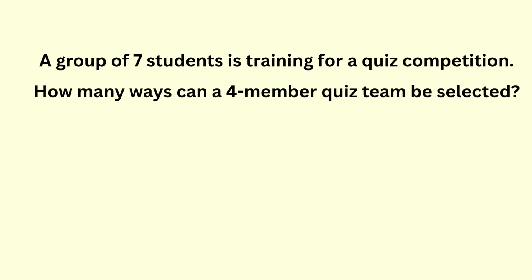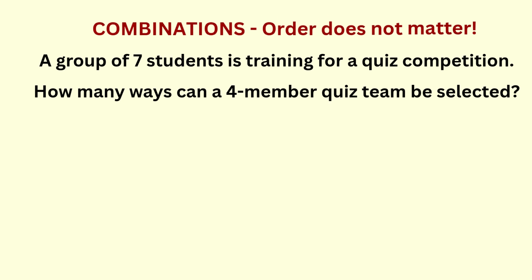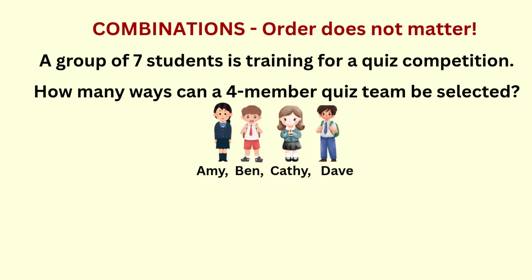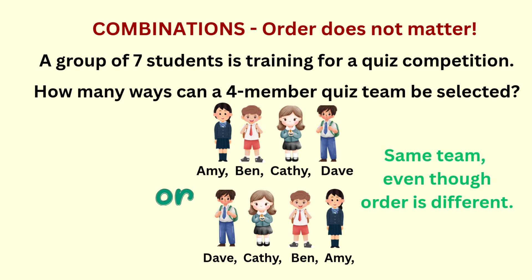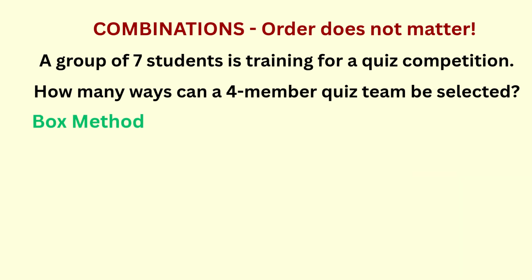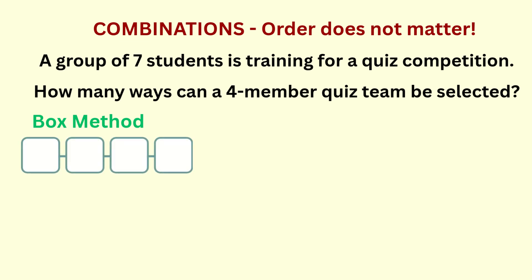Let's look at another problem. Imagine you have a group of 7 students training for a quiz competition and you need to choose 4 — no specific roles, just 4 students to represent the school. This is a combination problem because the order doesn't matter. Whether Amy, Ben, Cathy, and Dave are listed in that order or reversed, it's still the same team. So how do we calculate this? We can use the box method or the formula.